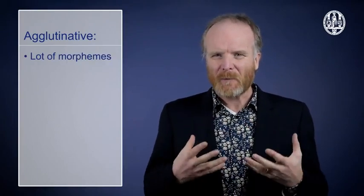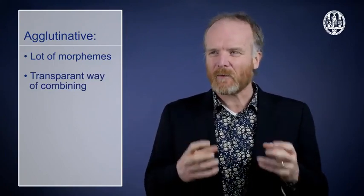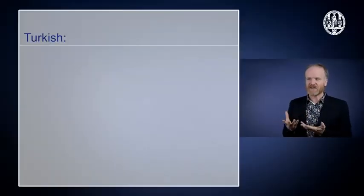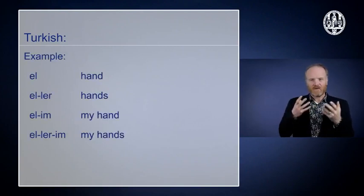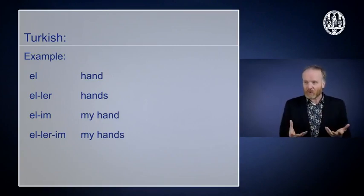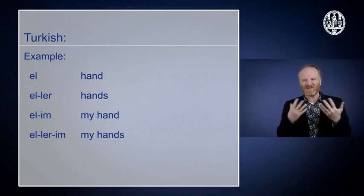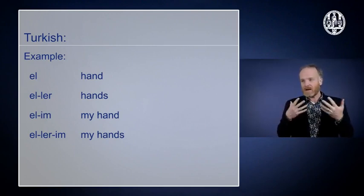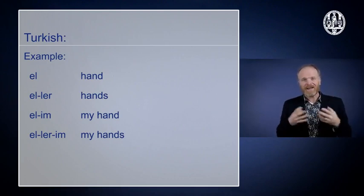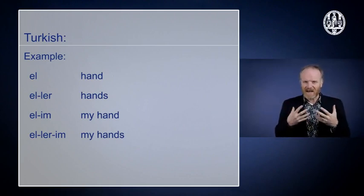The second type of language is called agglutinative. Agglutinative languages use a lot of morphemes, but put those morphemes together in a very transparent way. Turkish is an example of that. You see it here. You take hand as a base. You put one morpheme to make the plural. You get hands. You have another morpheme to give the possessive, as we call it, my hand. That's one morpheme. But you can also put both together. And you can see that they stay in the same shape.